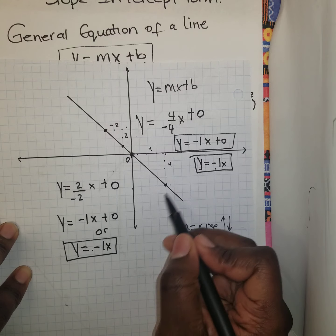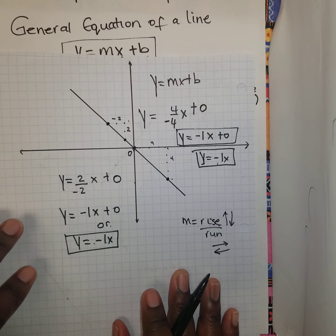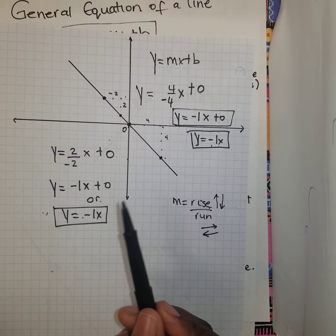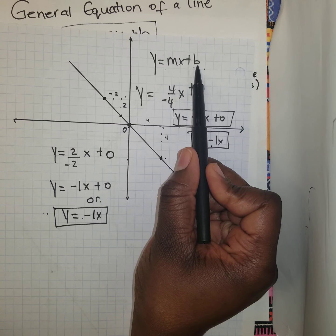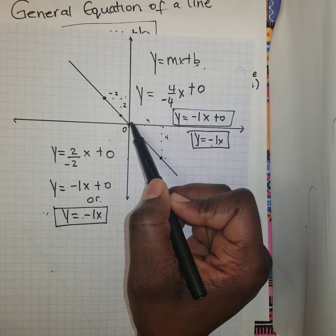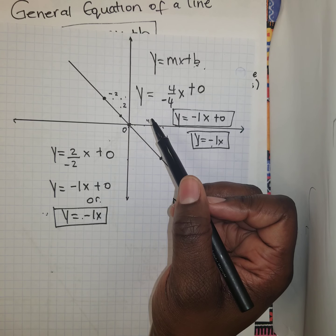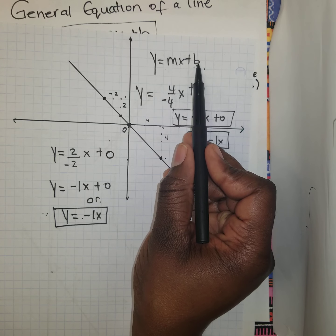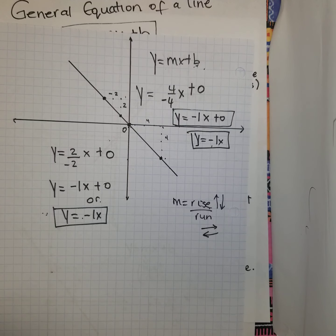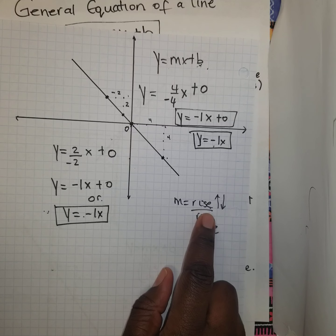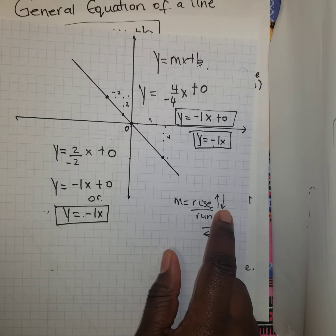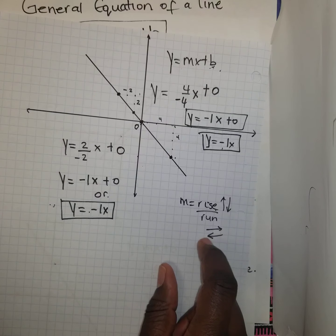Any two points you choose on this line should give you the same answer. Once you're given a line to identify its equation in the form y equals mx plus b, first identify your b value, which is your y-intercept. Then find the slope. The slope is rise over run — rise over run, where rise can be up or down (positive or negative), and run can go left or right (negative or positive).